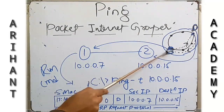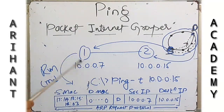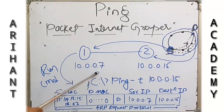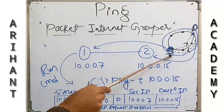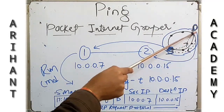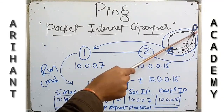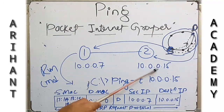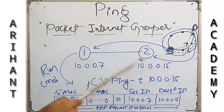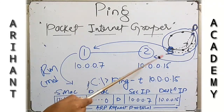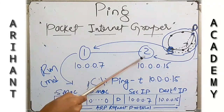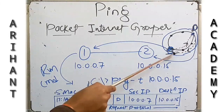For example, this source computer has IP address 10.0.0.7, and suppose this is a destination computer with IP address 10.0.0.15. Now we have to check whether computer 1 is connected to computer 2 or not.